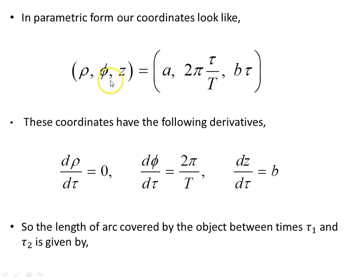And in parametric form, our coordinates now look like rho, phi, z, and now rho is a, phi is 2pi times tau over the period T, capital T, and z is b times tau, where b is a constant and a is a constant. T is also a constant because the period is fixed for each revolution. It's the same.